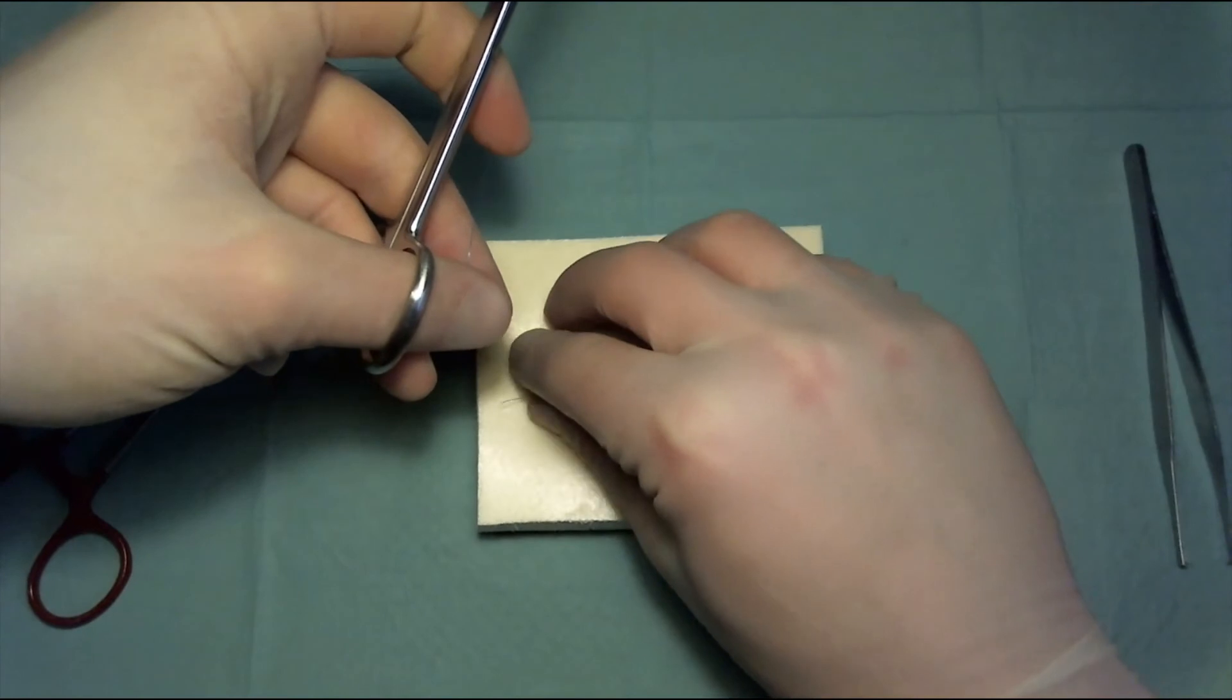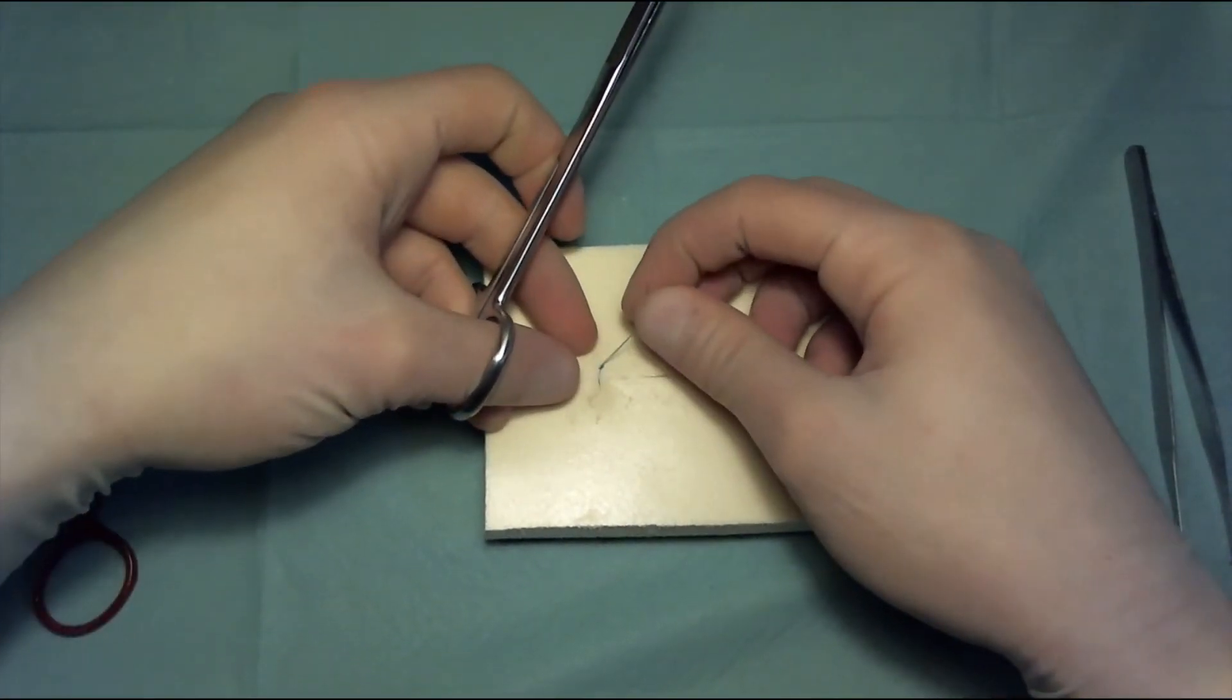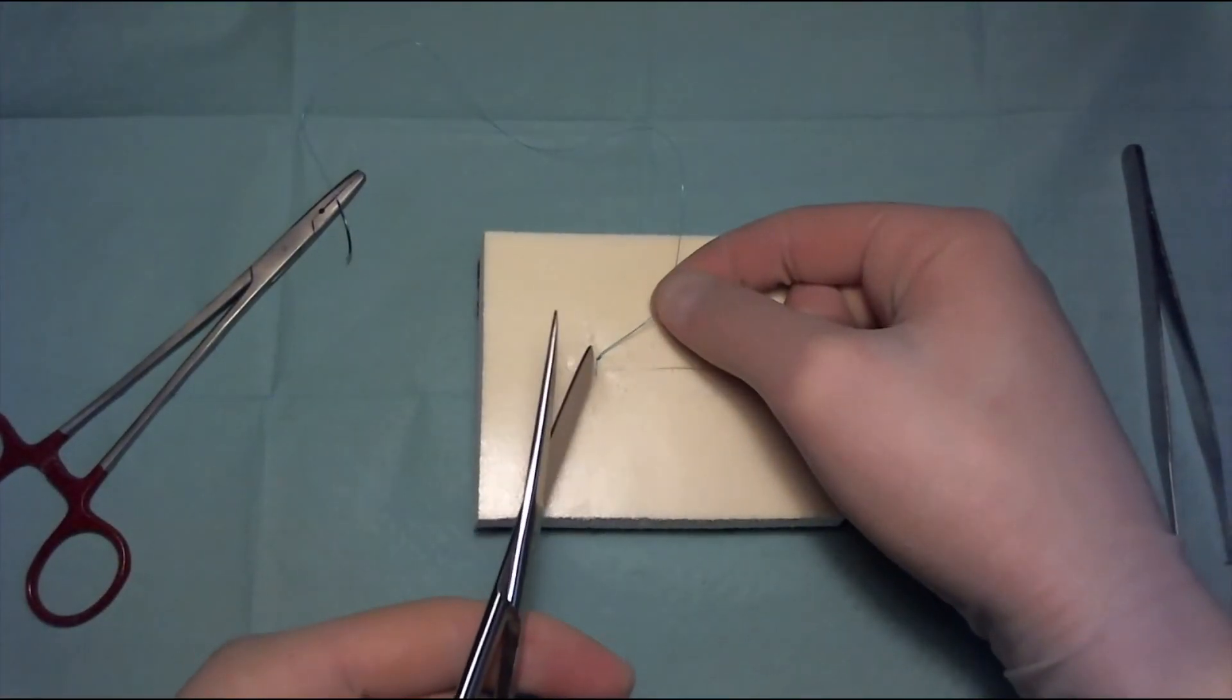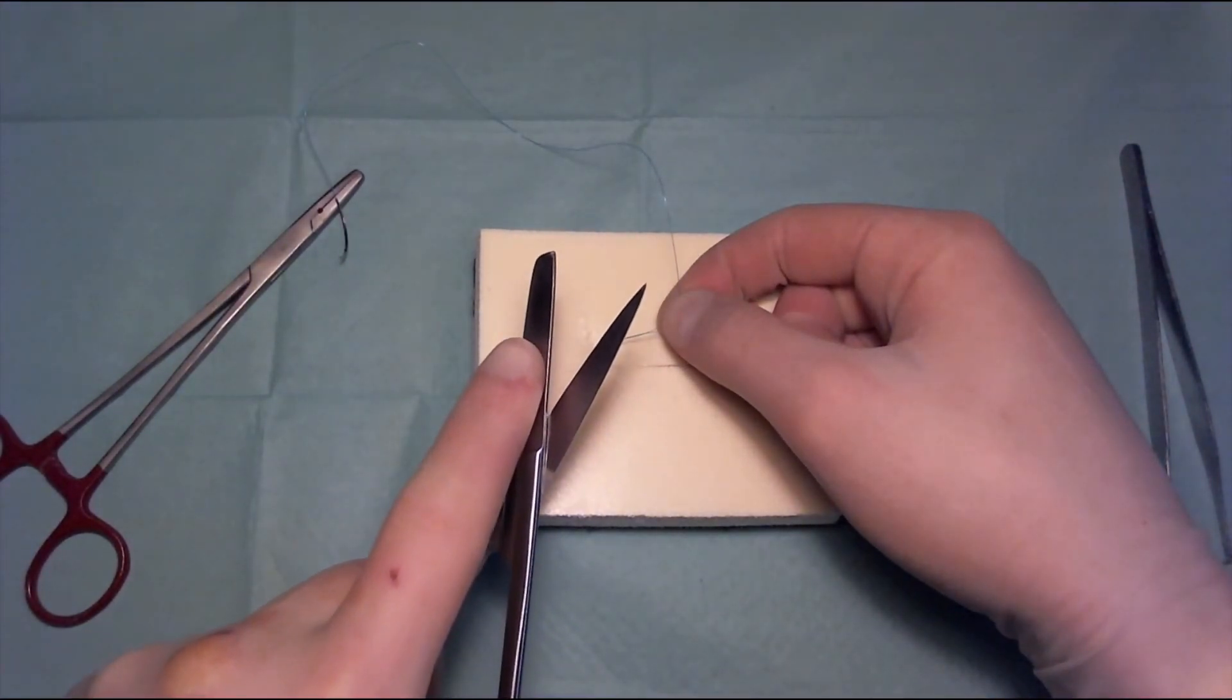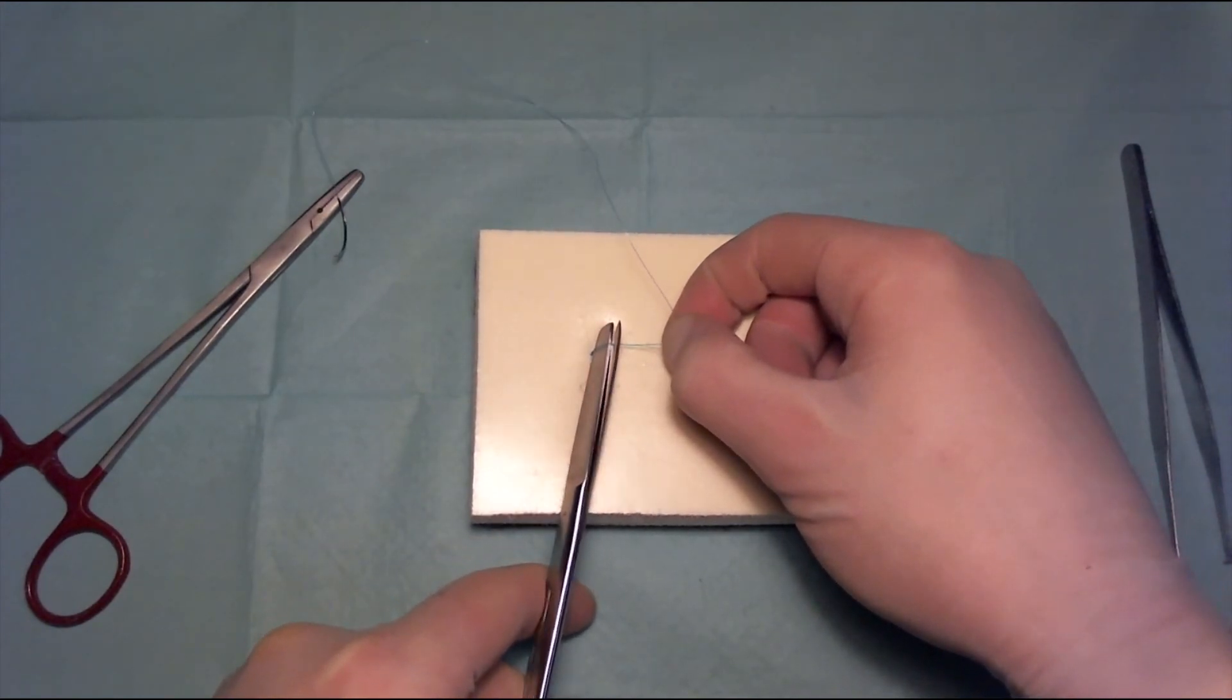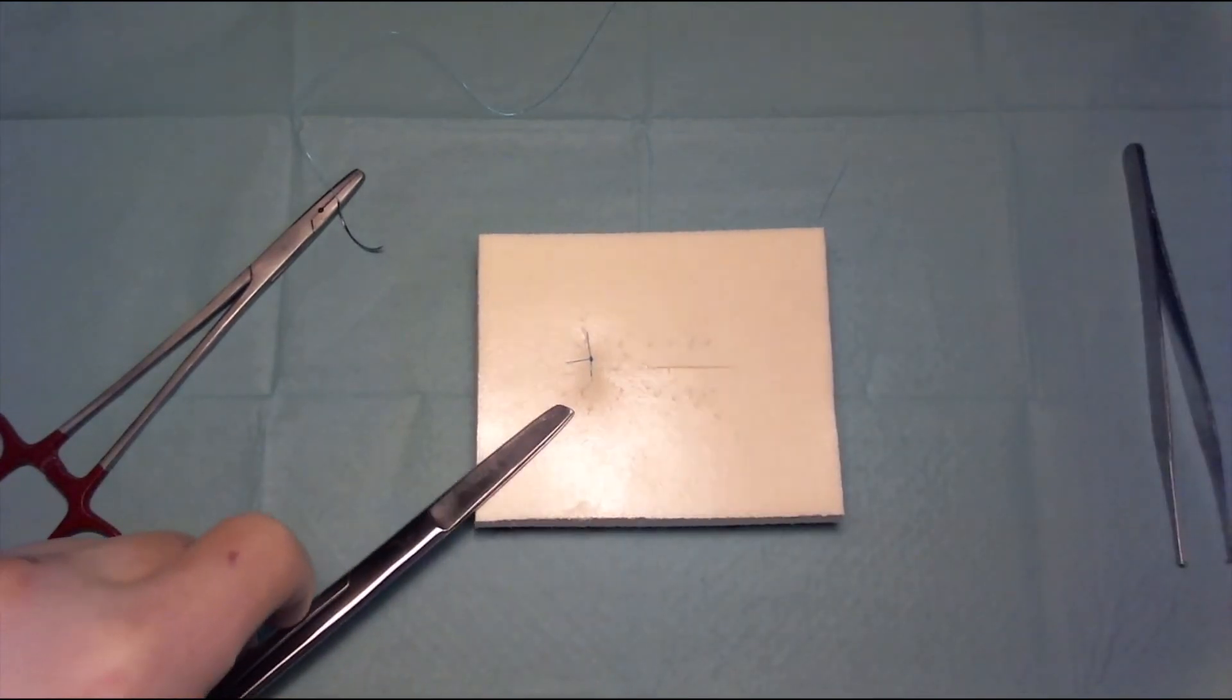And now only one more thing to do, and we're finished. We are going to grasp the two legs and pull it to the side. And we're going to cut it at the length of the broad side of the Mayo scissors. So we're going to use it as a measure. And we're going to cut it at that level. And that's our simple interrupted suture.